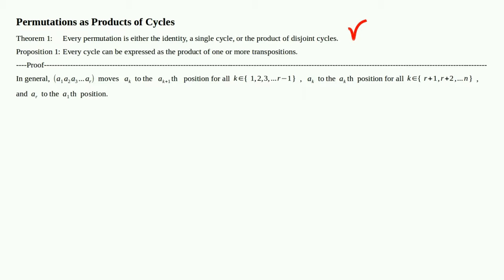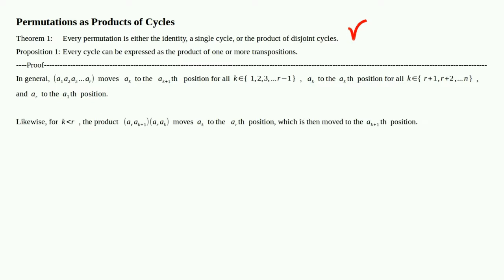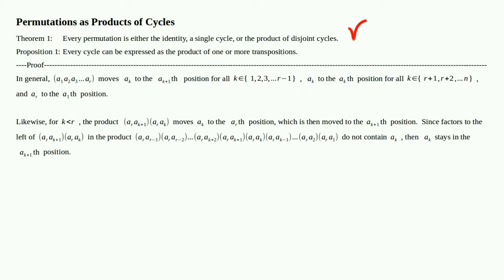For k less than r, the product of transpositions (aᵣ aₖ₊₁)(aᵣ aₖ) moves aₖ to the aᵣ position — that's the inside transposition — which is then moved to the aₖ₊₁ position by the outside transposition. If you're not sure about that, pause the video and work it out until you see that this product moves aₖ to aᵣ and then to aₖ₊₁.